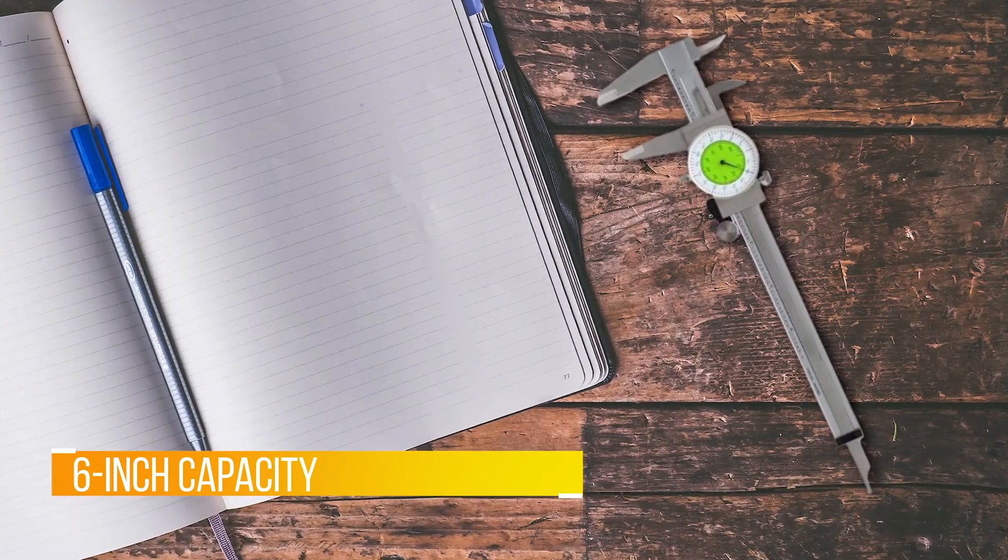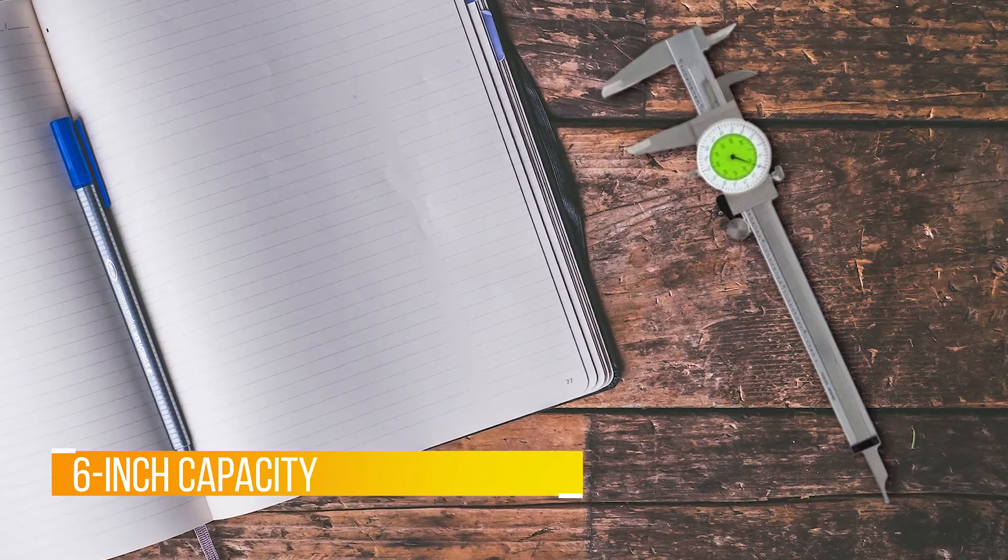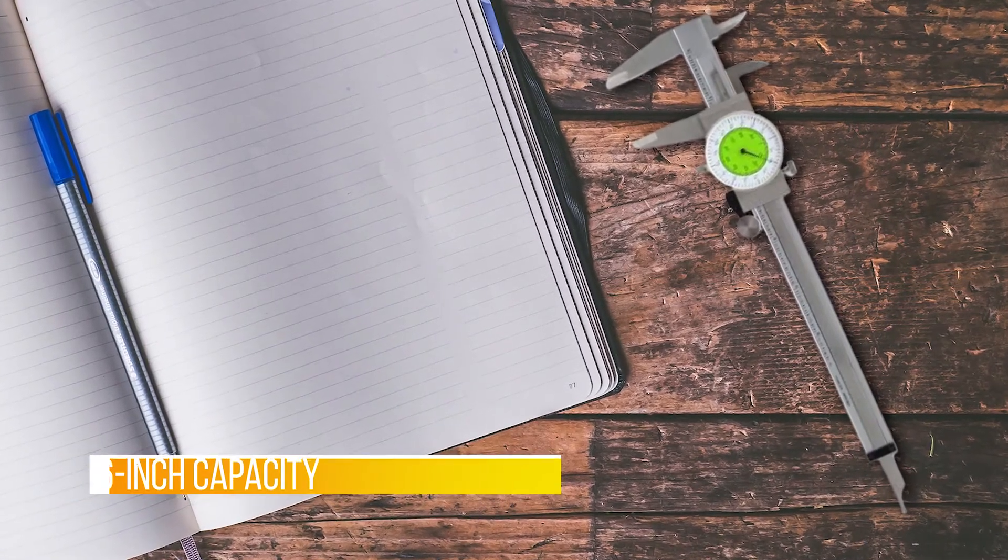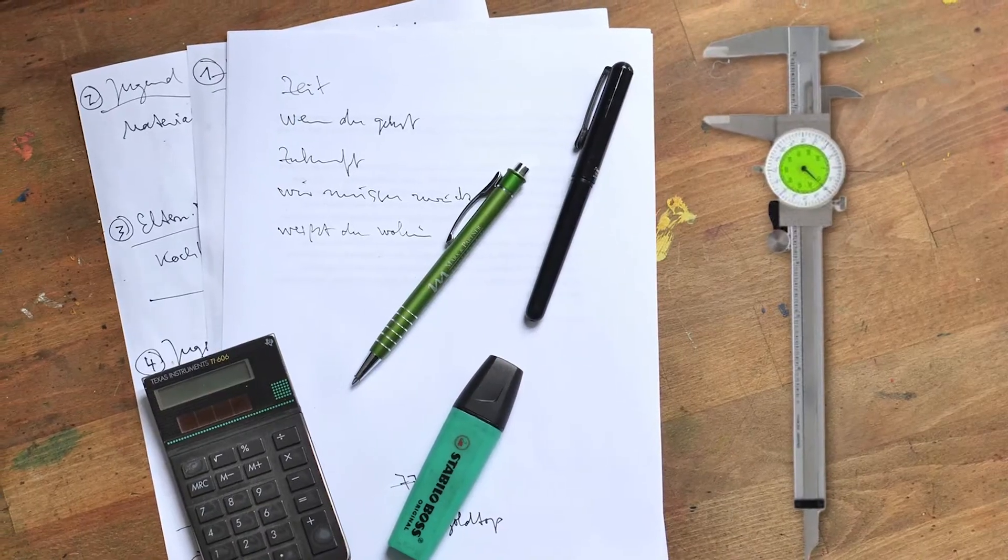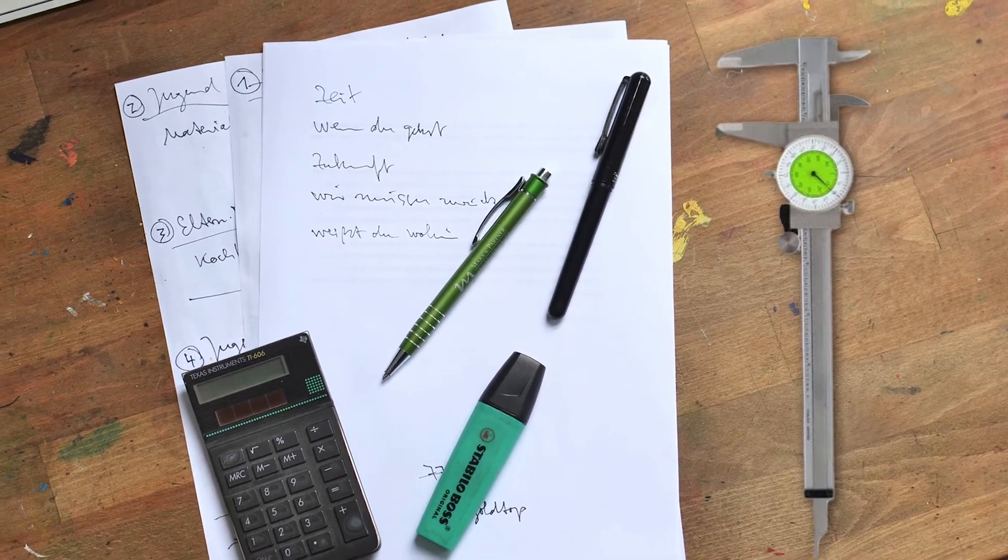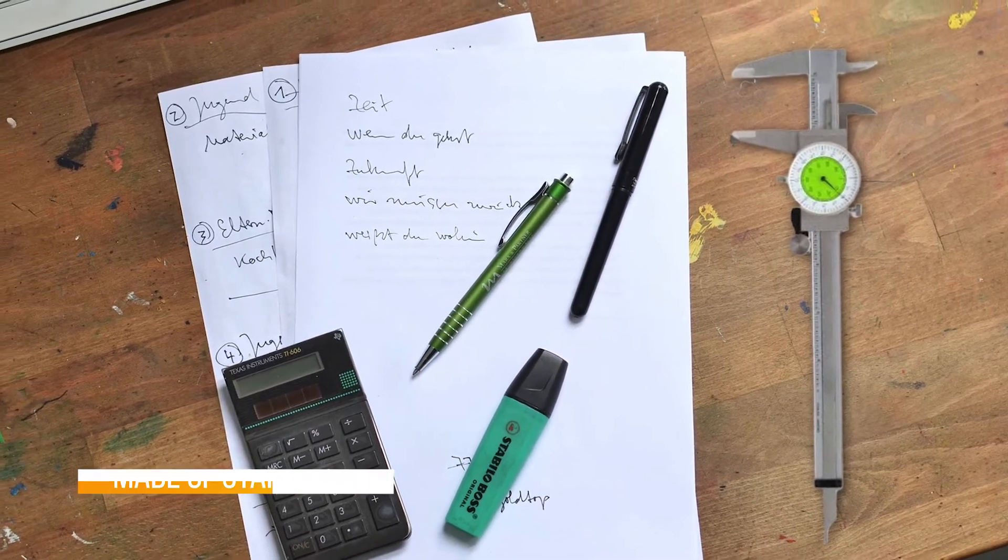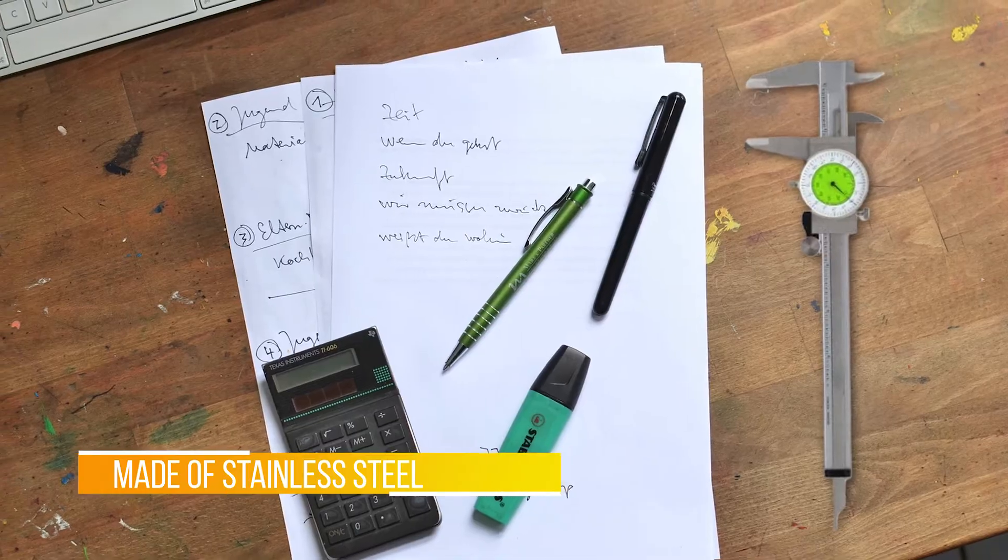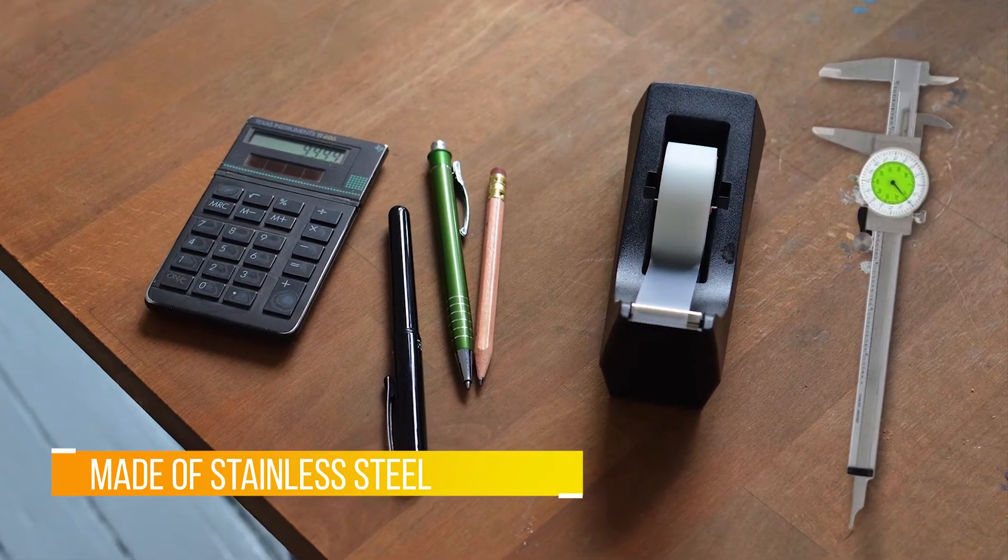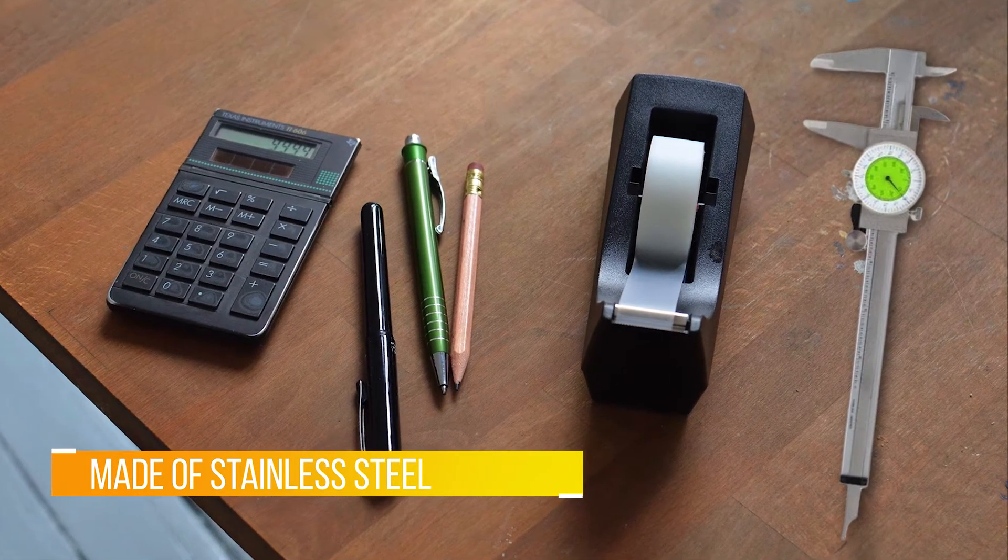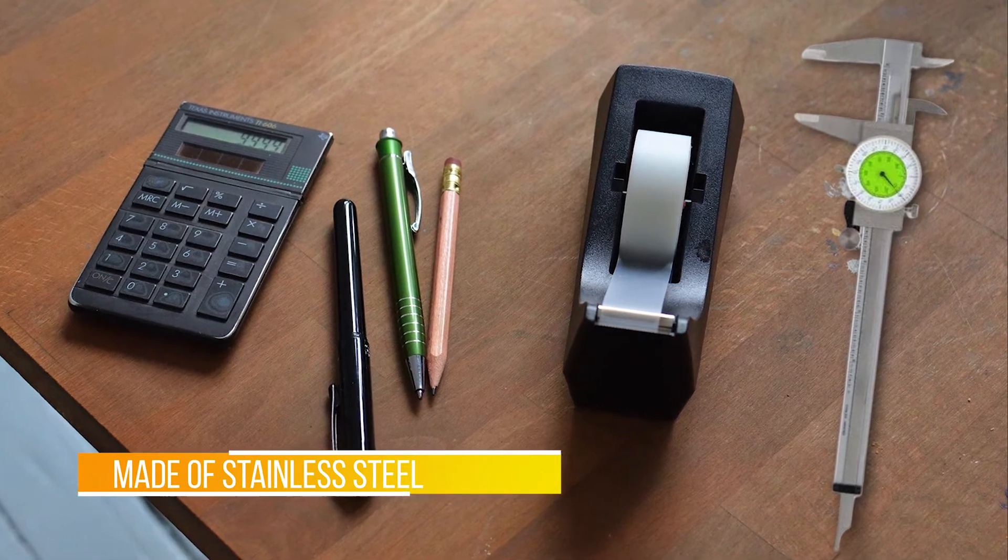Our six-inch fractional dial caliper is made of stainless steel and comes in a plastic storage case. It features a one and a half inch dial that is easy to read when taking outside, inside, depth, and step measurements. The dial face or bezel can be rotated to set zero anywhere on the scale.